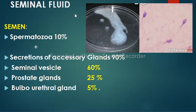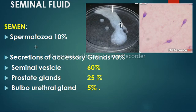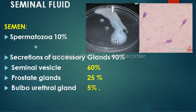Seminal fluid is a thick white sticky fluid containing spermatozoa that is ejaculated by the male genital tract. This semen contains 10% spermatozoa and 90% secretion of accessory glands. Of these 90% secretions, 60% are from the seminal vesicle, 25% from the prostate gland, and 5% from bulbo-urethral glands.